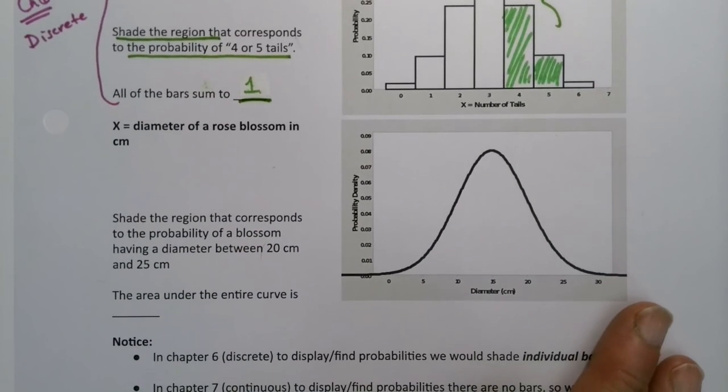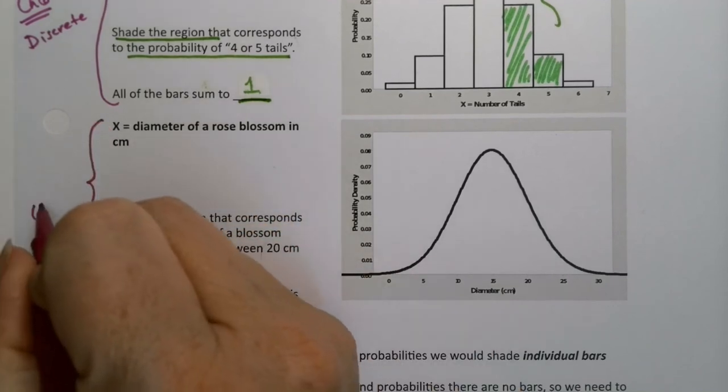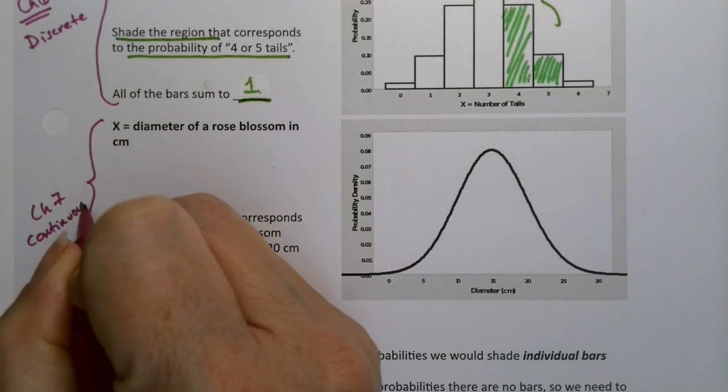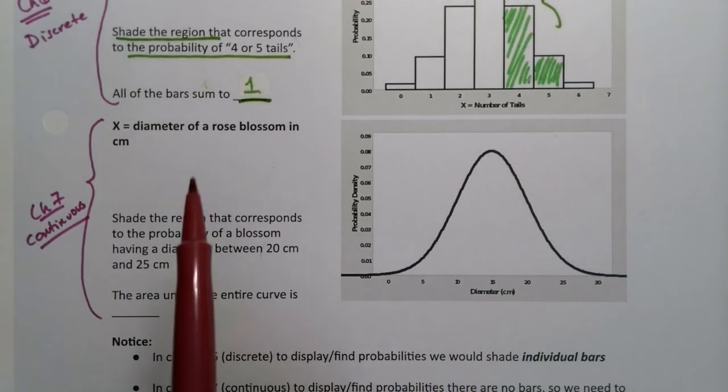What if it's not discrete? What if it's in Chapter 7, and it's continuous? Consider the diameter of a rose blossom.